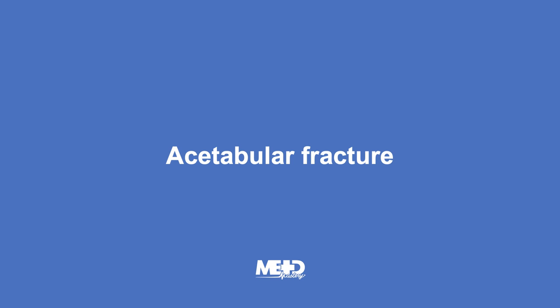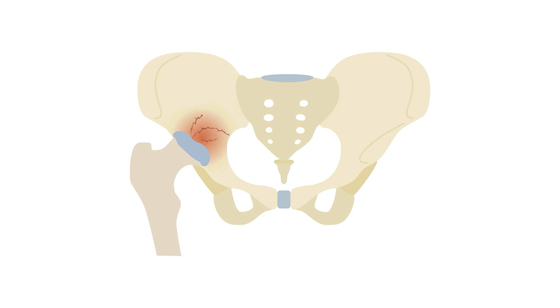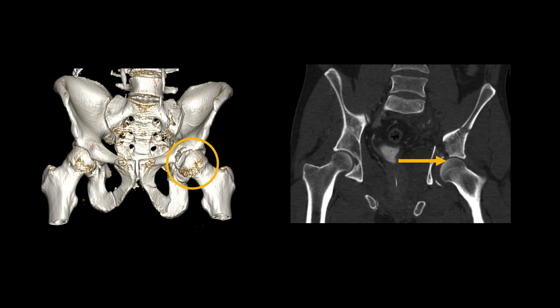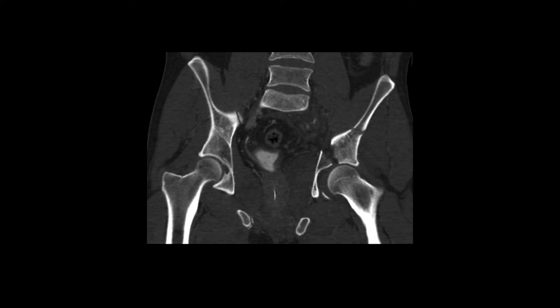Acetabular fractures may accompany other pelvic injuries. Fractures of the acetabulum occur when the femoral head is driven into the pelvis. Acetabular fractures are best seen on the coronal images, where we can see the familiar appearance of the hip joint. In this example, there is a large displaced cortical defect in the left acetabulum, as well as fracture of the iliac bone.